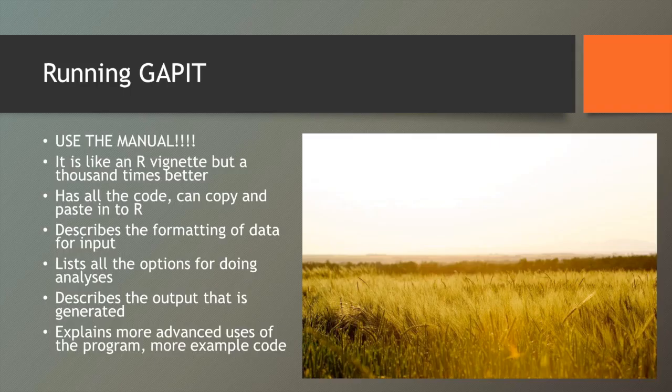Running GAPIT: my biggest piece of advice is just use the manual. It's like an R vignette, but literally a thousand times better. It has all the code, you can copy and paste it. They outline several scenarios you might encounter with your own data, and one of the more important things is how it describes formatting the data for input — as everybody knows, that's where most of your time is spent. It also lists all the options for doing the analyses, and today I will present but a very short list of them.